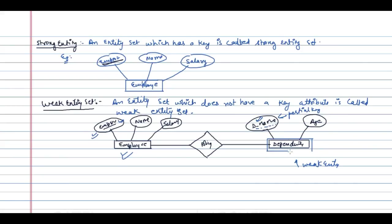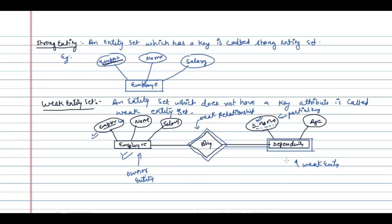So these dependents are depending on the employee, making Dependent a weak entity. Weak entities are generally denoted with a double rectangle. The relationship here is acting as an identifying relationship, drawn with a double diamond. It is a weak relationship. The Employee is acting as the owner entity, and Dependent is the weak entity.